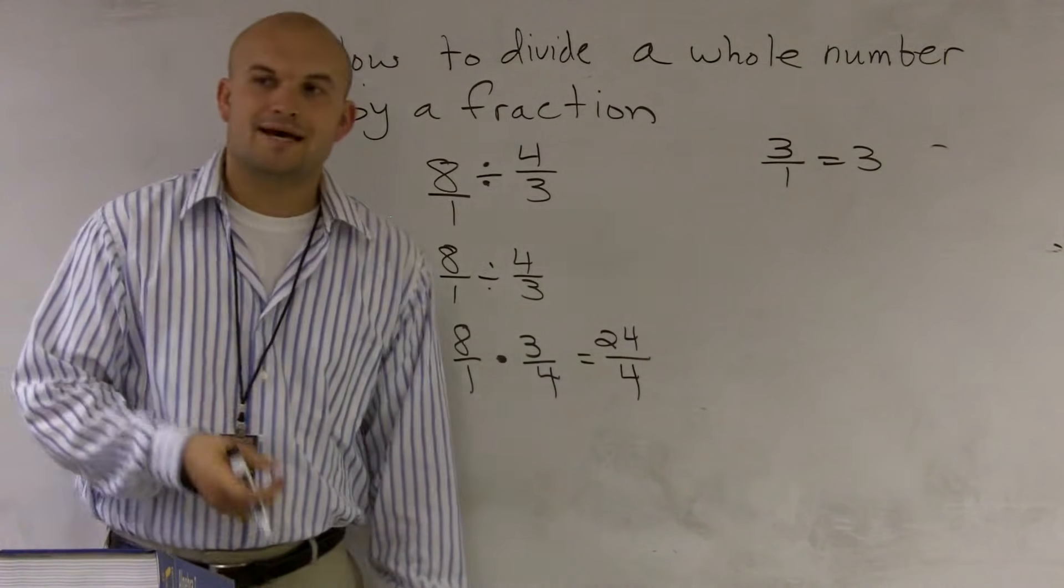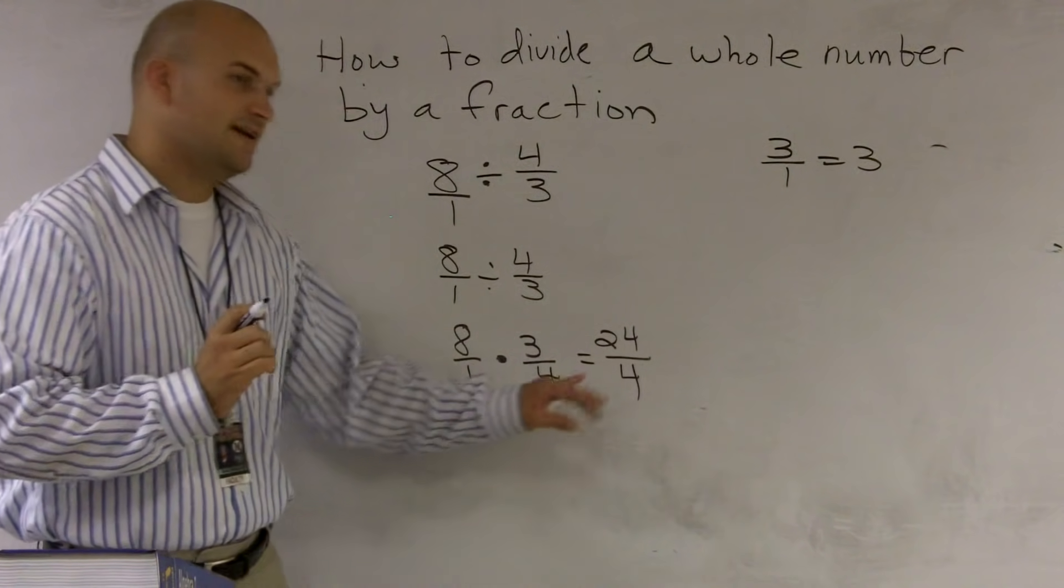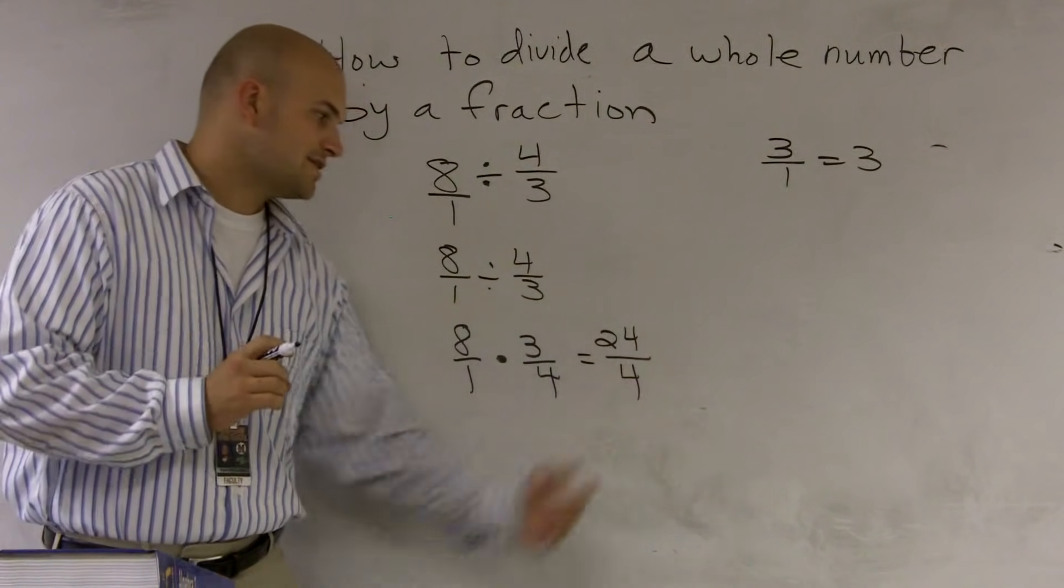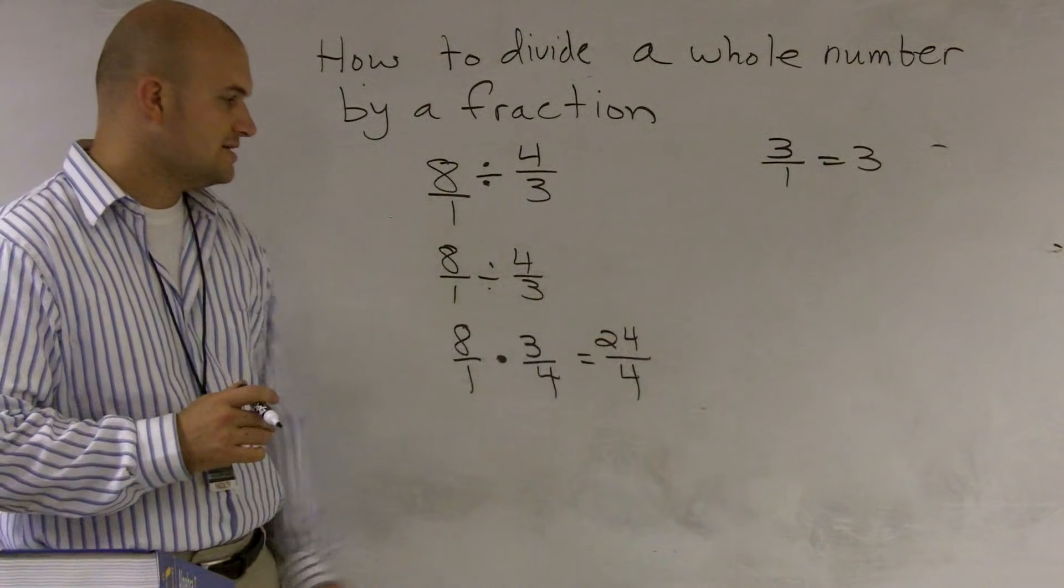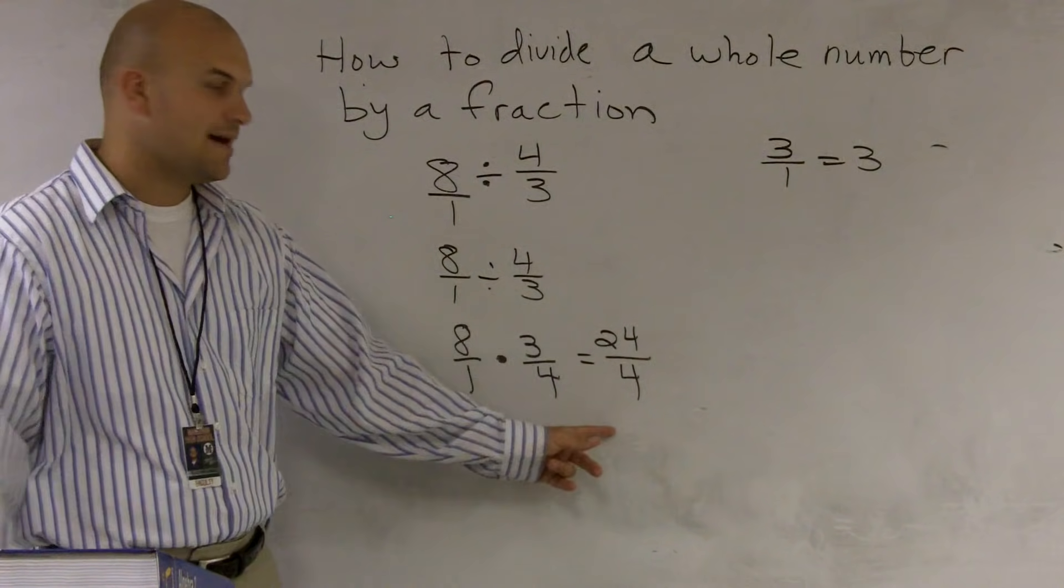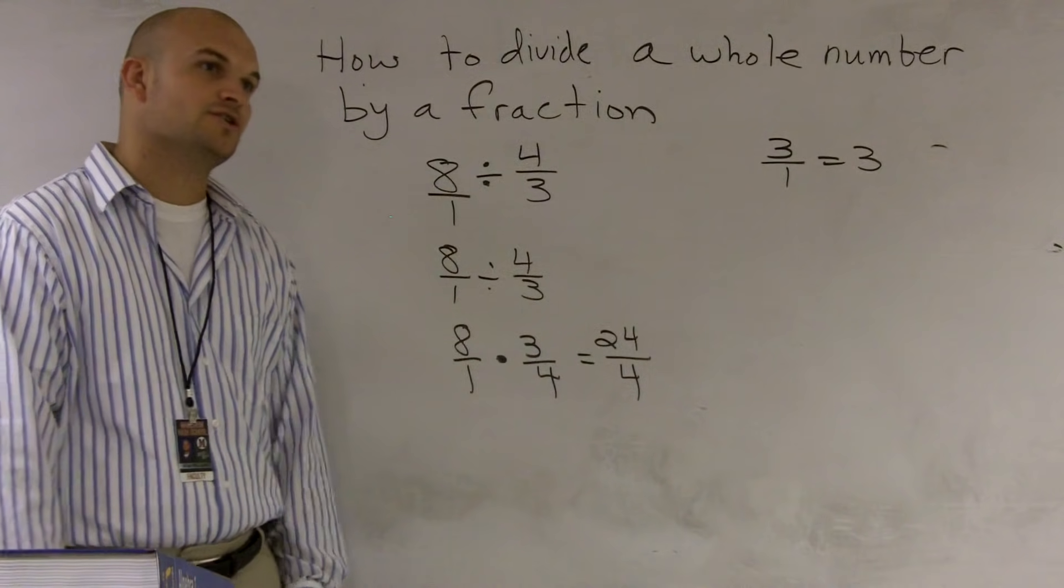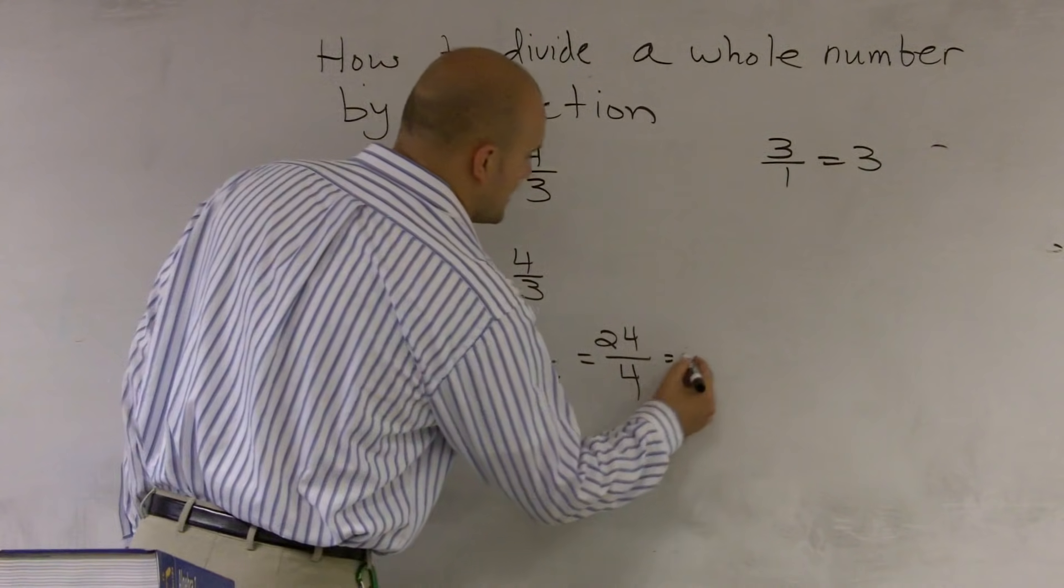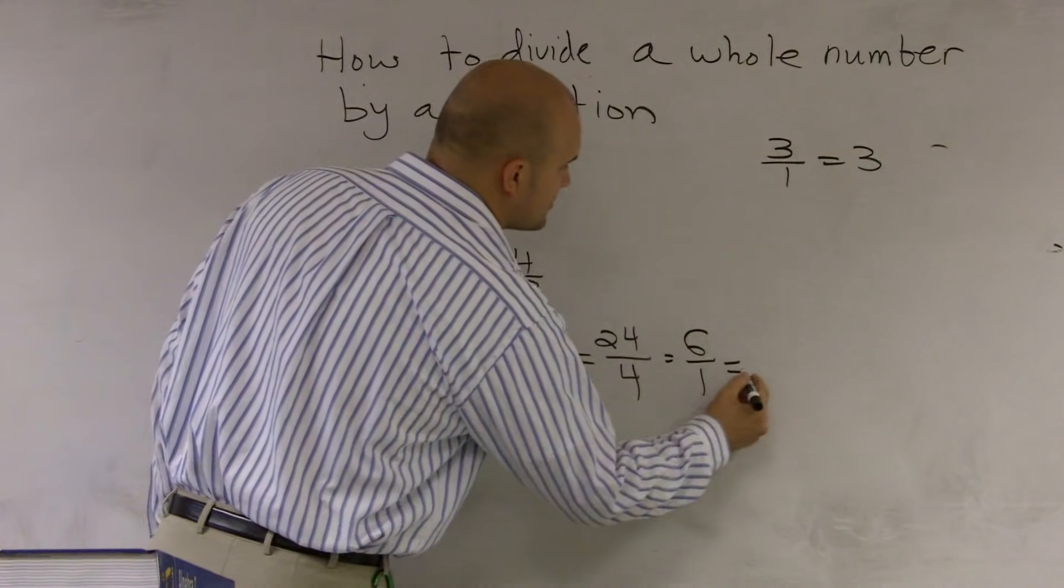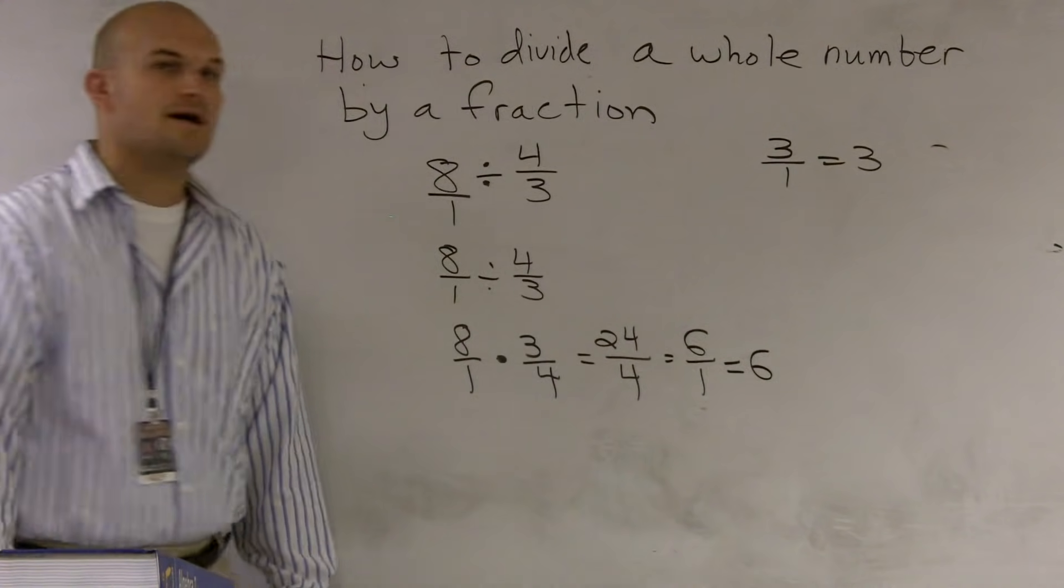Then our last step that we always need to make sure we look at is to see if we can simplify our fraction. And as you guys should notice that, 4 goes into the denominator, and 4 goes also into the numerator. So it becomes 6 over 1, which reduces down to 6. And that is your final solution.